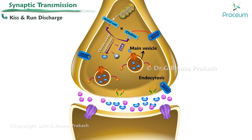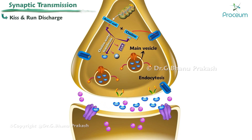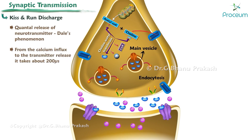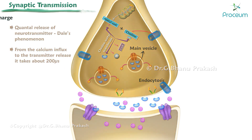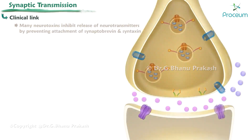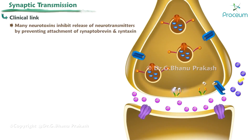Transmitter is released into the synaptic cleft in a quantized amount that diffuses passively across the synaptic cleft to the postsynaptic membrane. Quantal release of neurotransmitter is sometimes called Dale's phenomenon. From the calcium influx to the transmitter release, it takes about 200 microseconds.